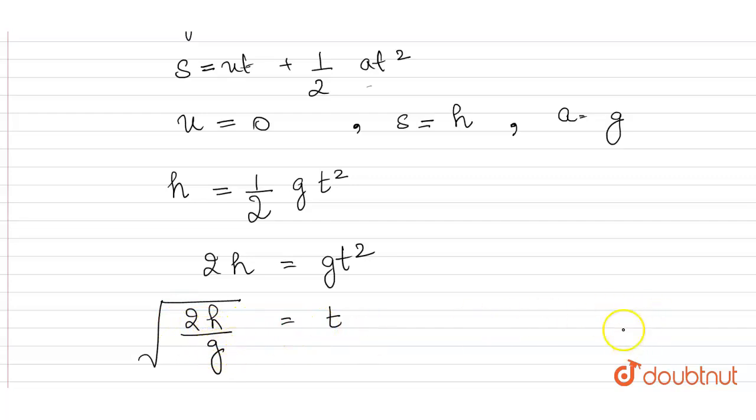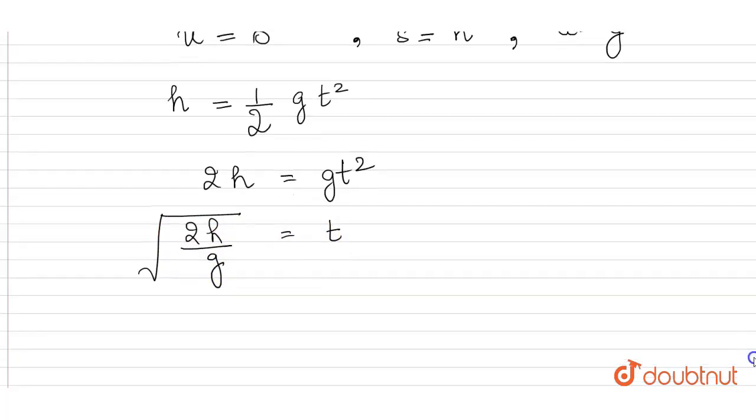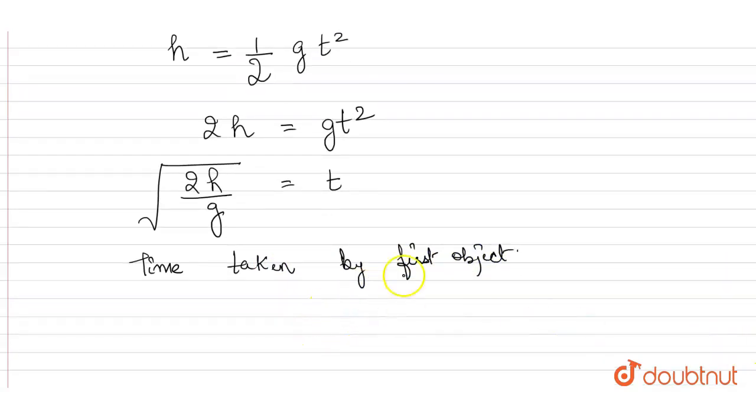Now we have different masses and different heights, so time taken by the first object will be t1. We will place h1 here, so t1 = √(2h1/g).